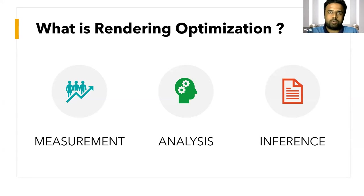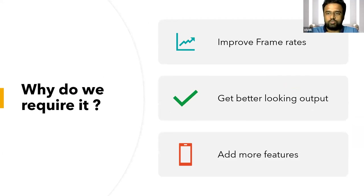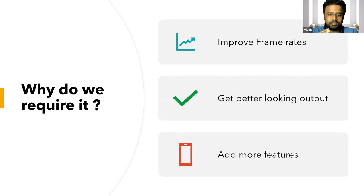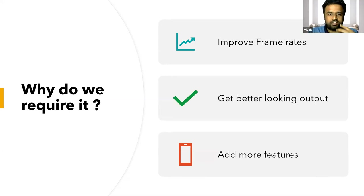This is required in any content — the automobile industry, gaming industry, movie industry, or anything. It is a common thing that happens any time you create 3D content in today's engine pipelines. Why do we require rendering optimization? We require it if we need higher frame rates, which is one of the critical components that audiences recognize. You can also get better-looking output, and by solving those two things, you can add other features — like more trees, more particles, more effects. That's why you require rendering optimization.